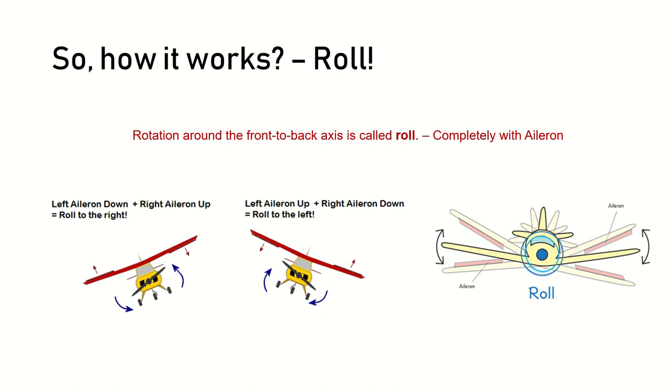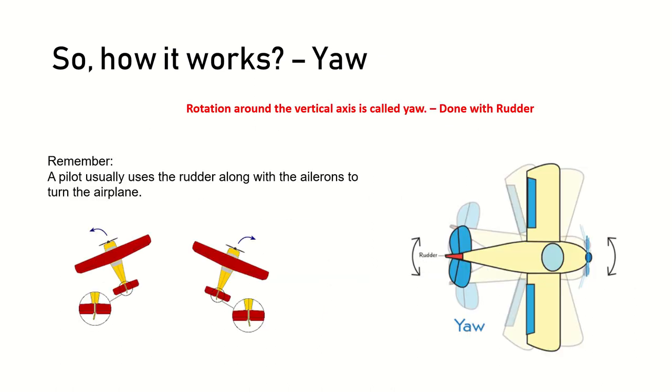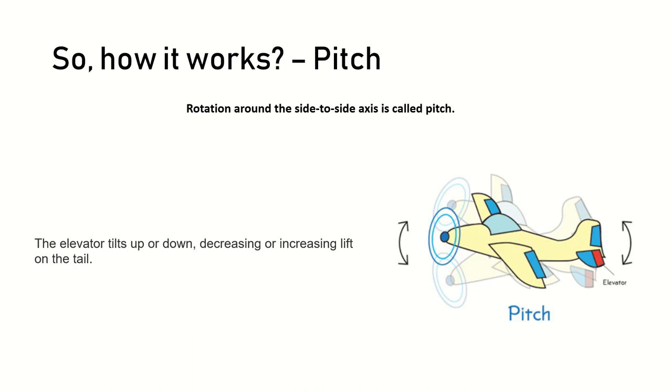This is done with the component called a rudder. In the previous example of roll, we used something called an aileron. In this we use something called a rudder. Remember, the rudder can be turned left or right, and based on that the flight will move to left or right.